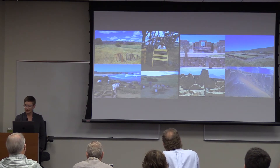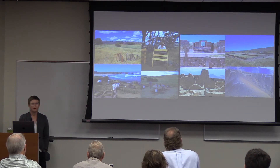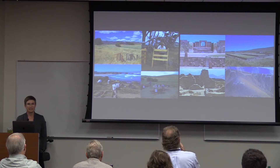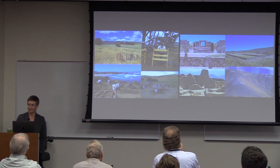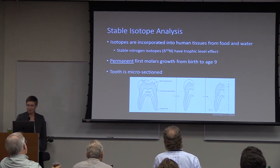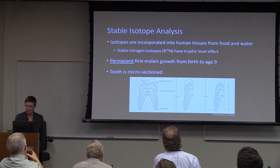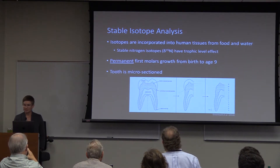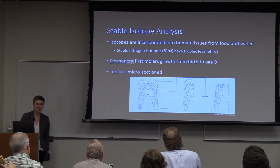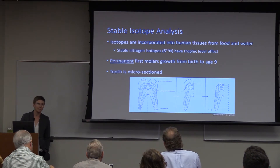Before we get into the data, I'm going to give a brief overview of the methods I use to reconstruct ancient diet in people's early lives. In order to reconstruct the weaning age and diet of ancient peoples, I use two stable isotopes that indicate the protein component of diet that's incorporated into bodily tissues from the things people eat and drink.